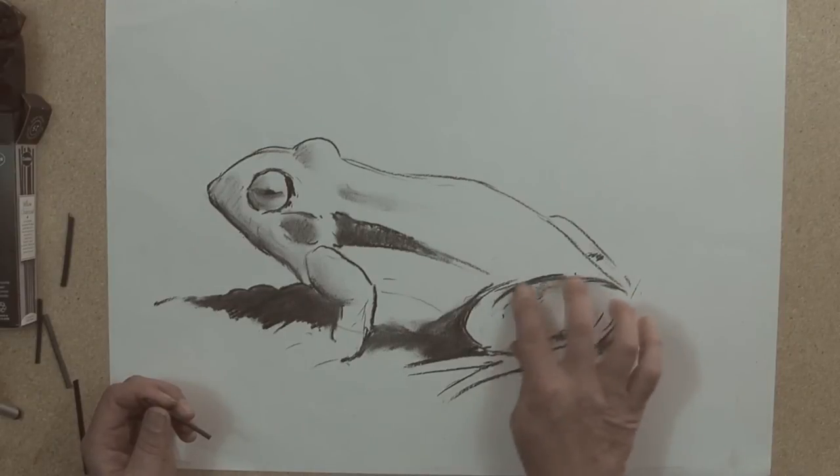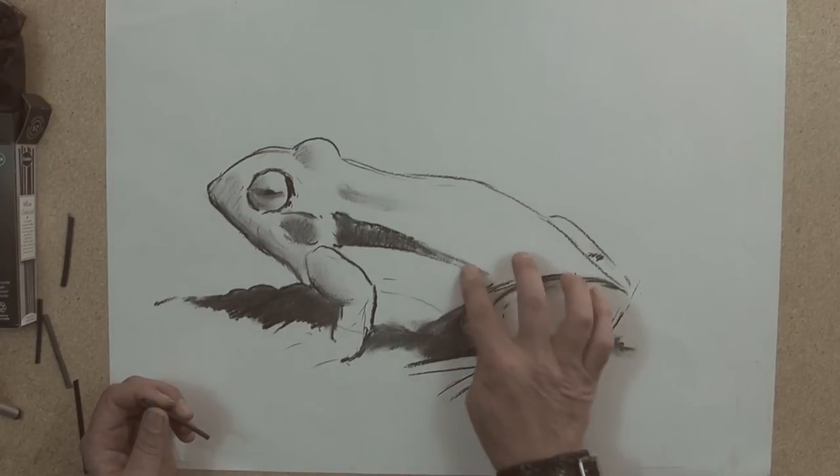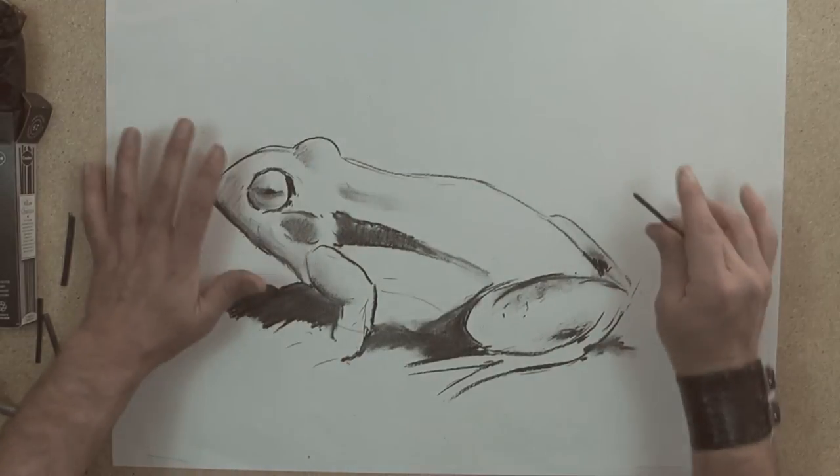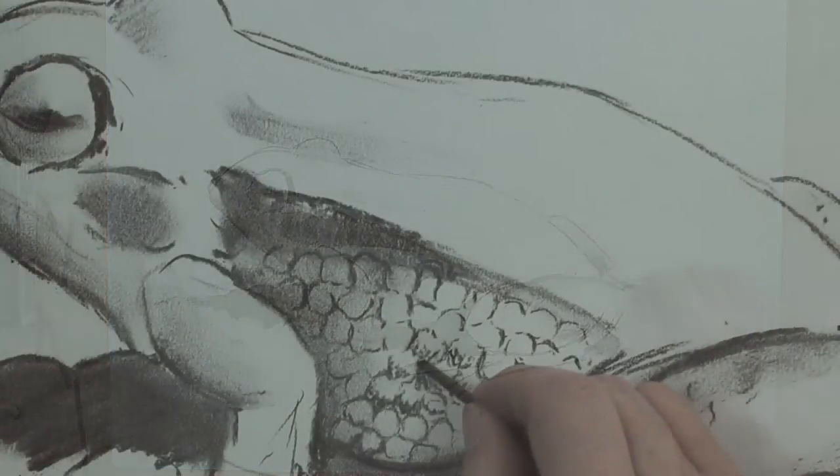At this stage it's very important to look where you're going to leave your white. This is really important where you've got to be very careful of not putting your finger where you don't want to smudge.